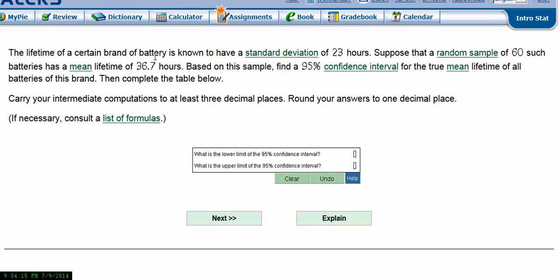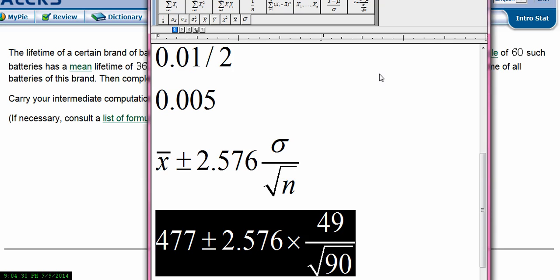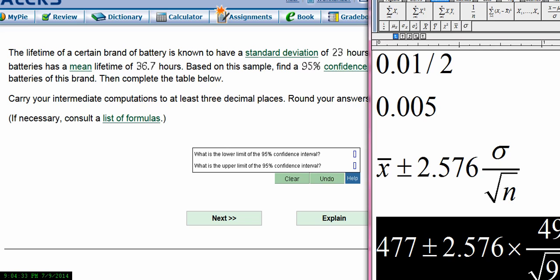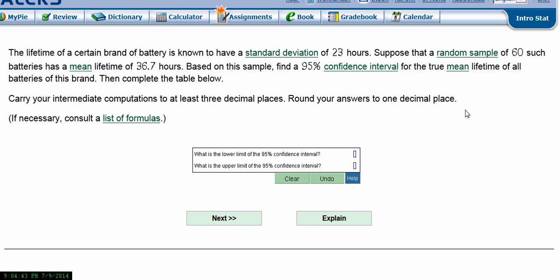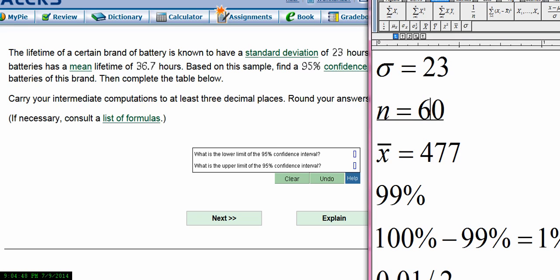So it says the lifetime of a certain battery is known to have a standard deviation of 23. Suppose you have a random sample of 60 and it has a mean of 36.7. Based on this, let's find a 95% confidence interval. So let's capture the information that we do know. So we know that sigma is equal to 23 in this particular problem. That's the population standard deviation. The sample size in this particular case is 60, and then the mean is 36.7 hours.